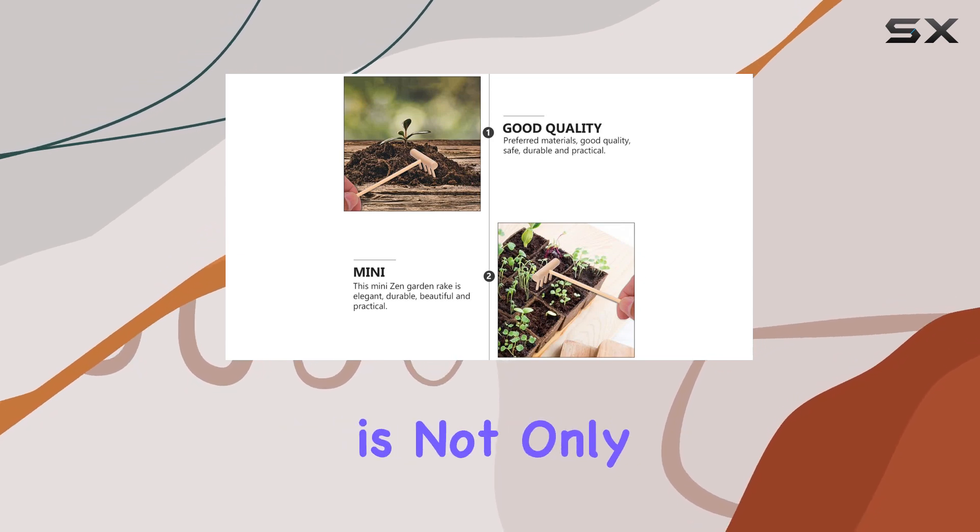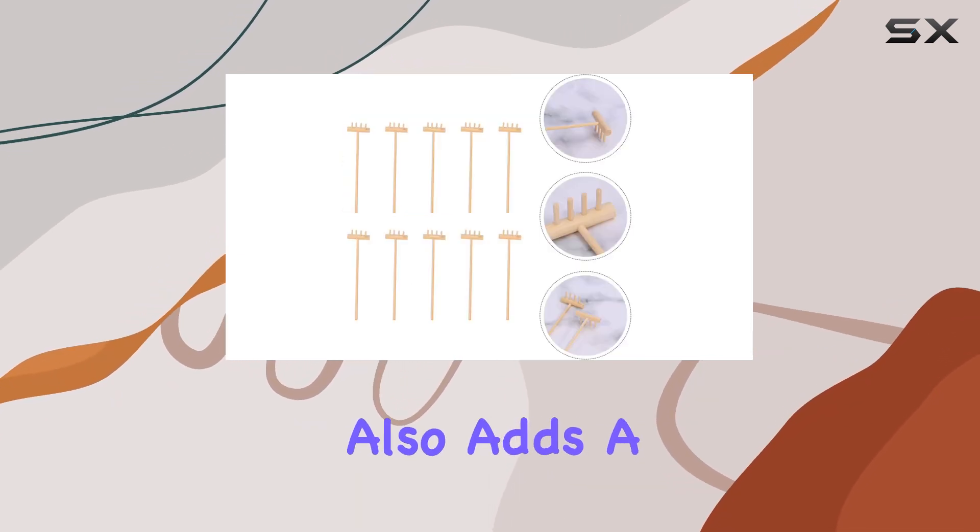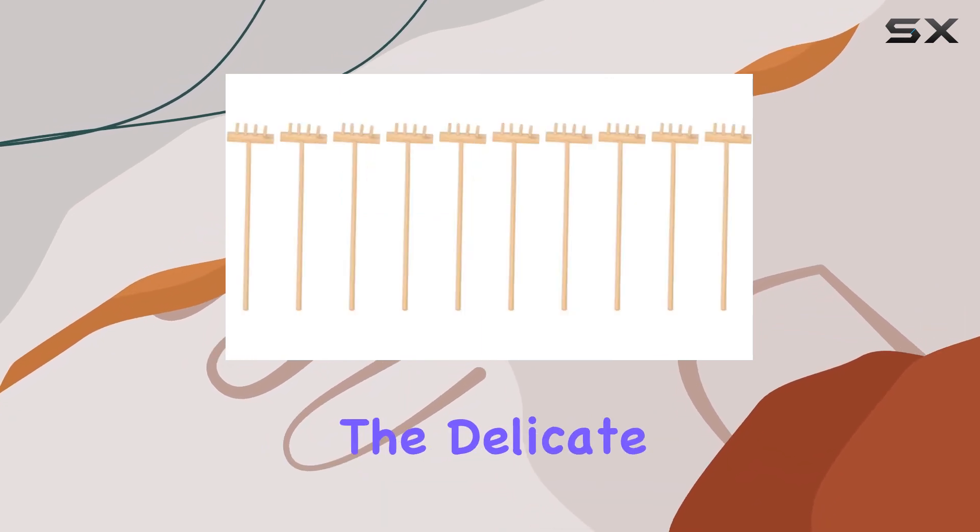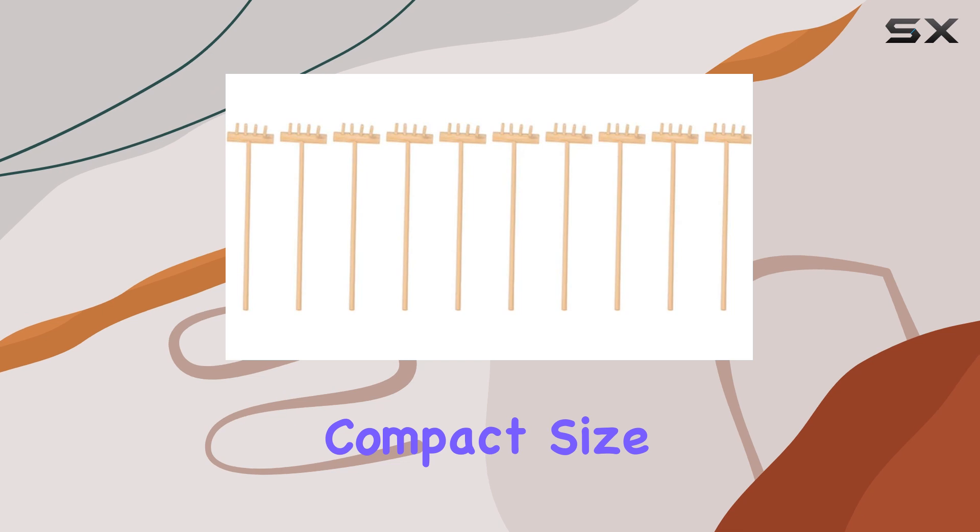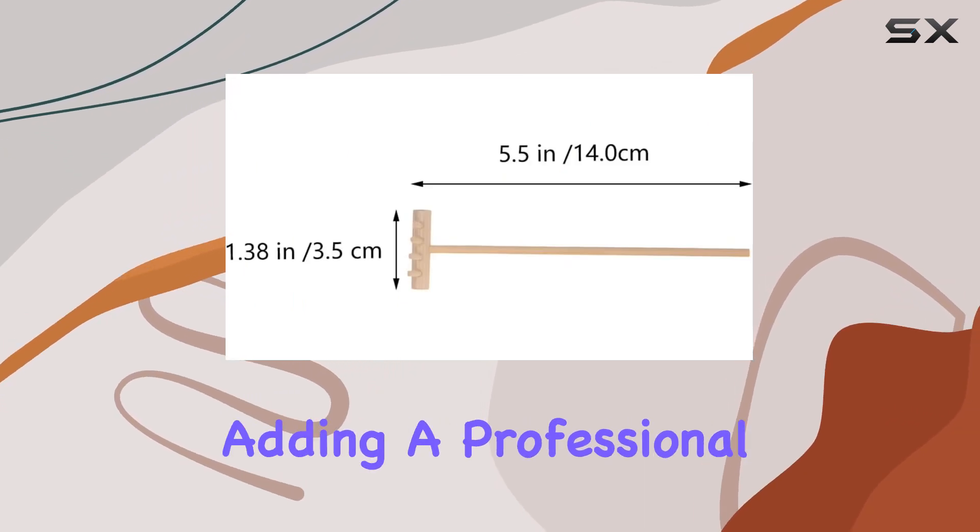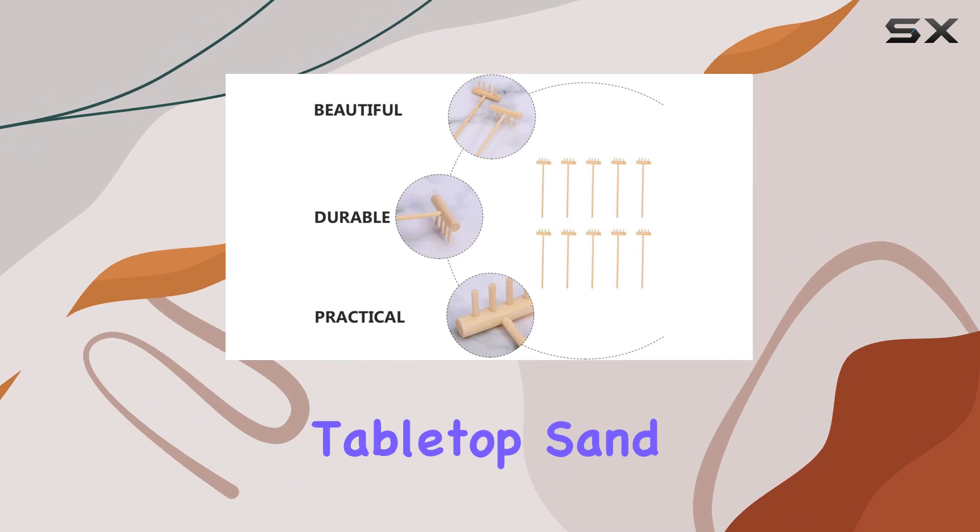They come with a wooden handle that is not only practical, but also adds a touch of traditional charm. These mini rakes are perfect for the delicate art of sand raking in your Zen garden. Their compact size makes them ideal for intricate designs and detailed patterns, adding a professional touch to your tabletop sand tray.